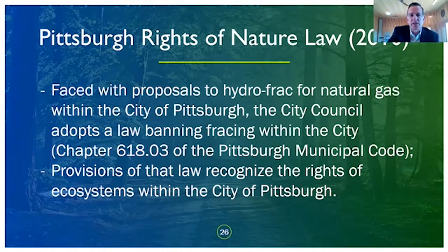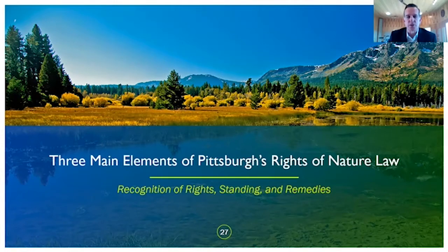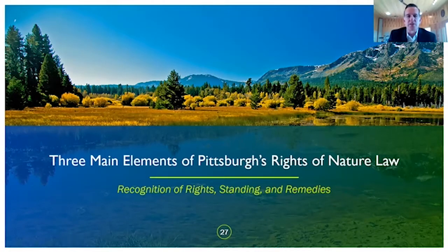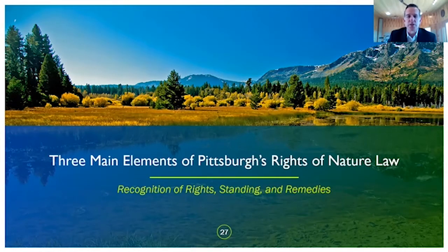The city of Pittsburgh was concerned with this, and so they adopted a rights of nature law in 2010 that appears at chapter 618.03 of the Pittsburgh Municipal Code. That rights of nature law recognizes the rights of ecosystems within the city of Pittsburgh. We'll see that there are three main elements of a rights of nature law. The first element is recognition of rights, normally involving recognition of rights of nature — ecosystems, species, water, air, other elements of nature — and also recognition of the rights of people to healthy nature and ecosystems. The second provision is a standing provision, and the third provision is a remedies provision.